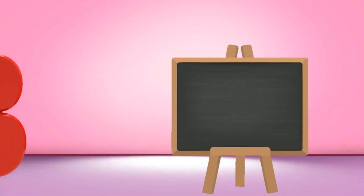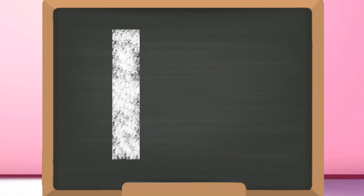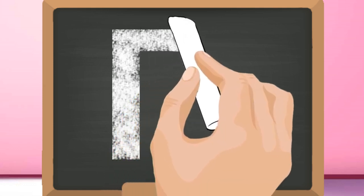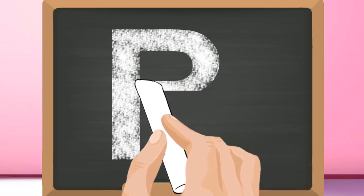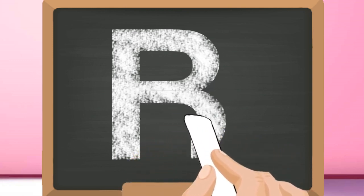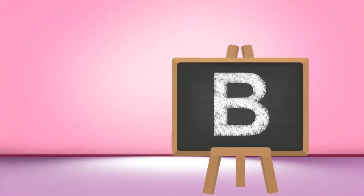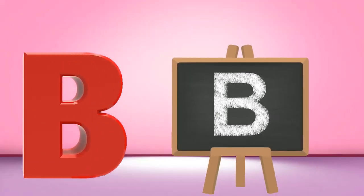B, capital B. Start from the top and draw a slanting line down. Go back to the top and draw a curve to the middle. Then draw a curve joining the bottom. Capital B.